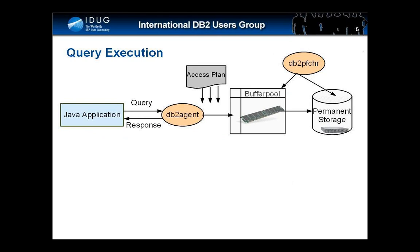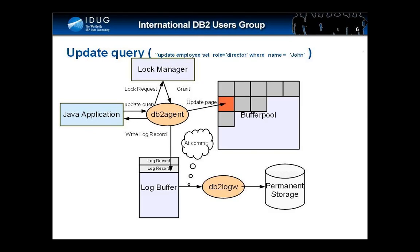Now let us look at what happens when you run a query that updates a page in the buffer pool. Going back to our example, consider that employee John is promoted to be the director of sales. The query might look like: UPDATE employee SET role = 'director' WHERE name = 'John'. Once the DB2 agent receives this update statement, it locates the data page that needs modification, obtains the necessary locks, and proceeds to modify the data page.